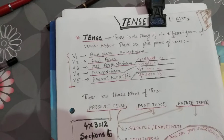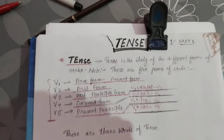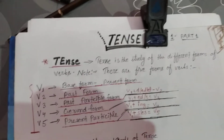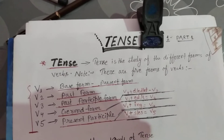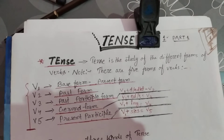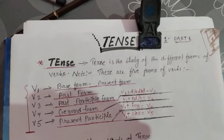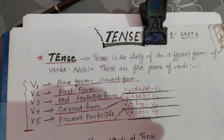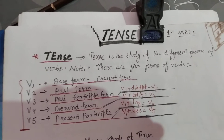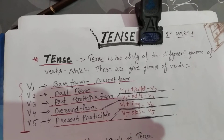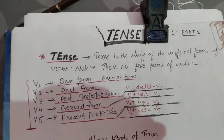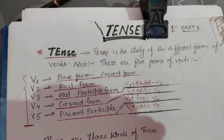What is a tense? According to the definition, tense is the study of the different forms of verbs. When we talk about the different forms of a verb, a question comes to mind: how many types of forms are there of a verb?